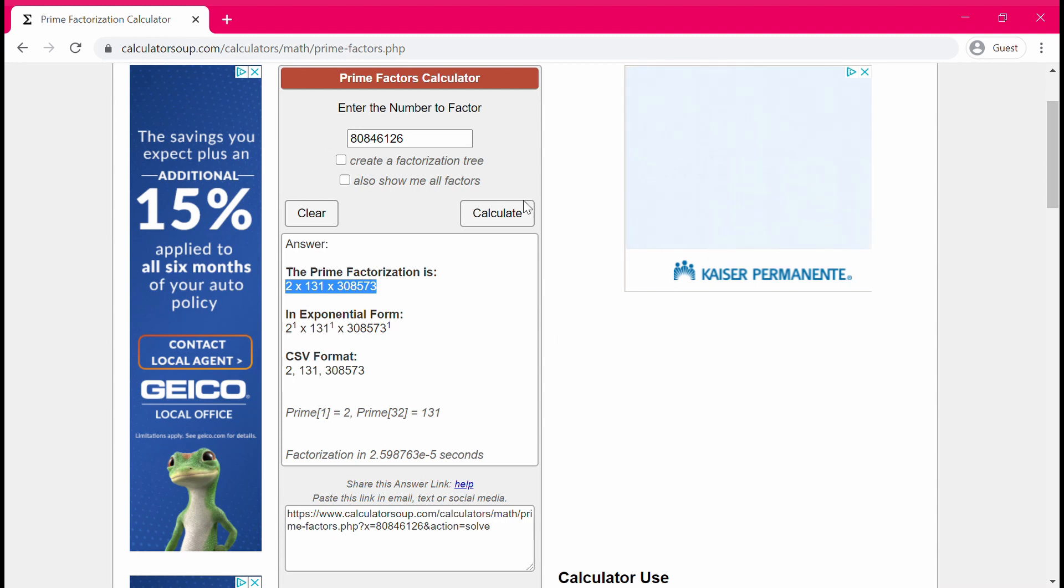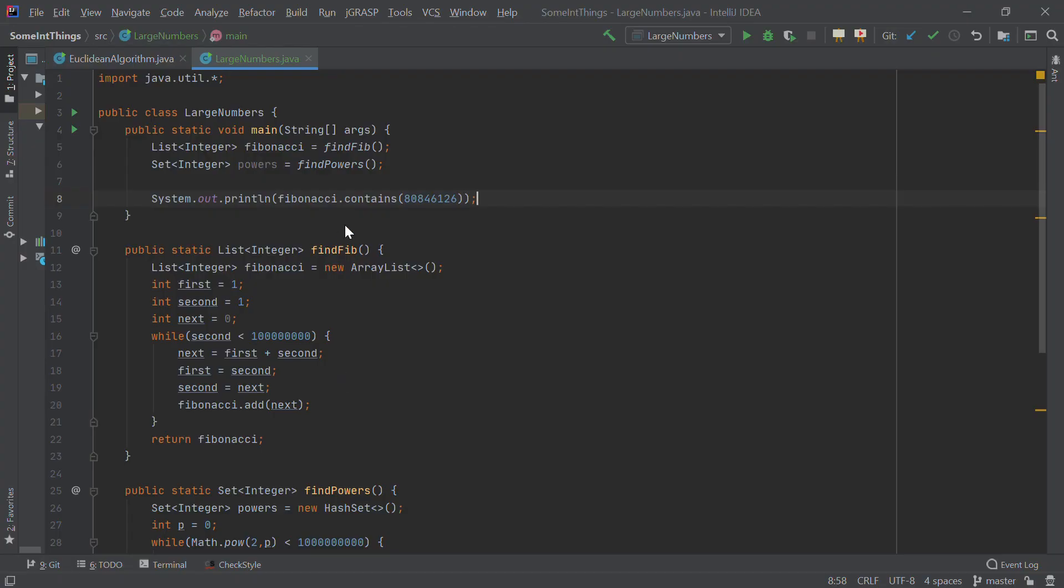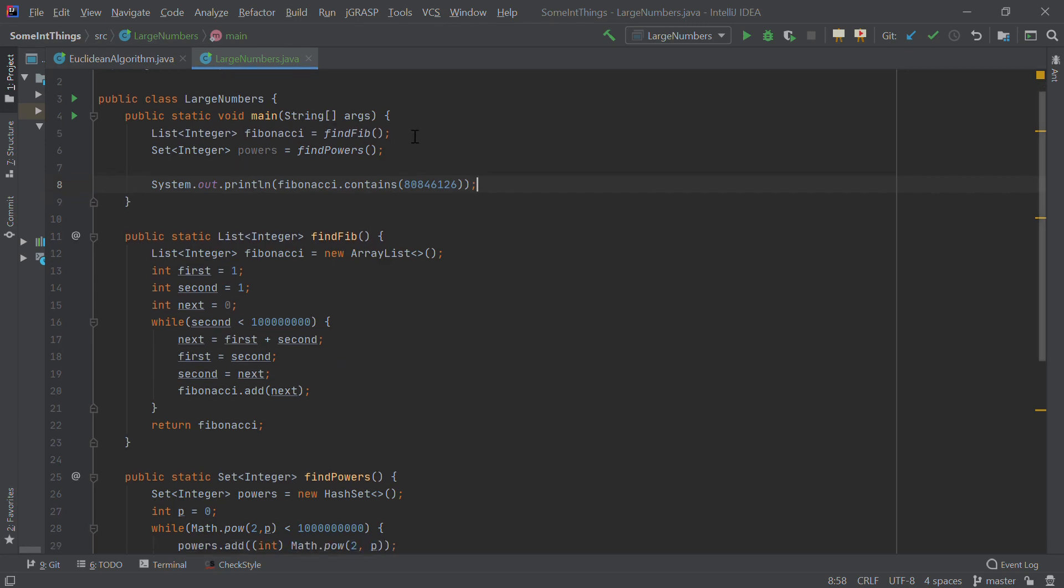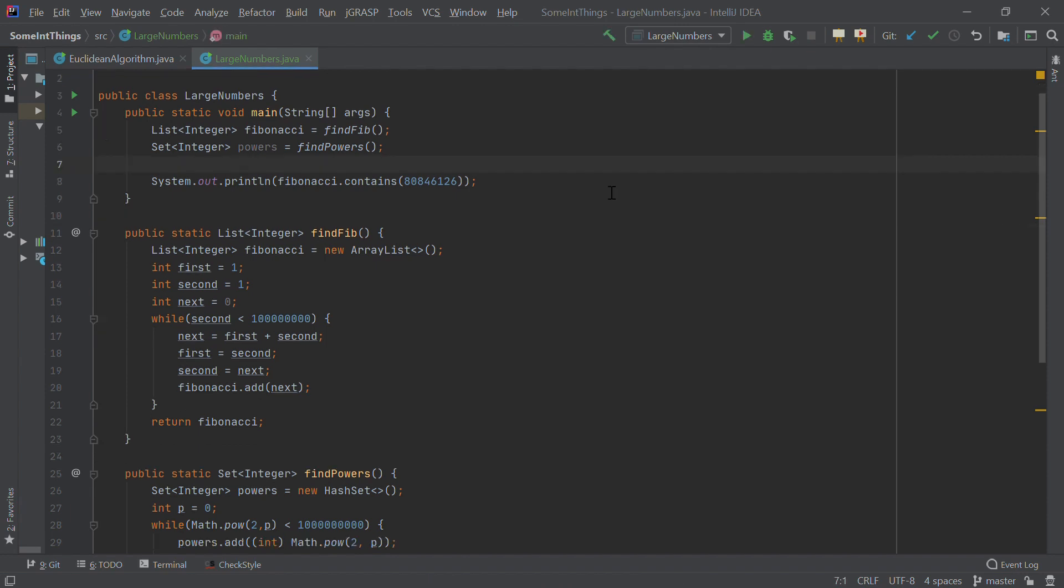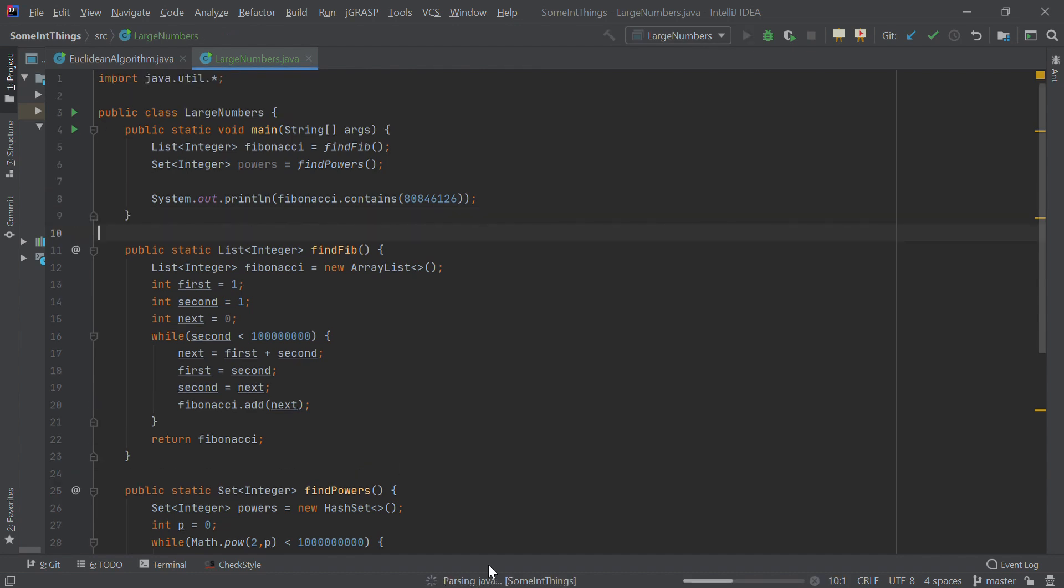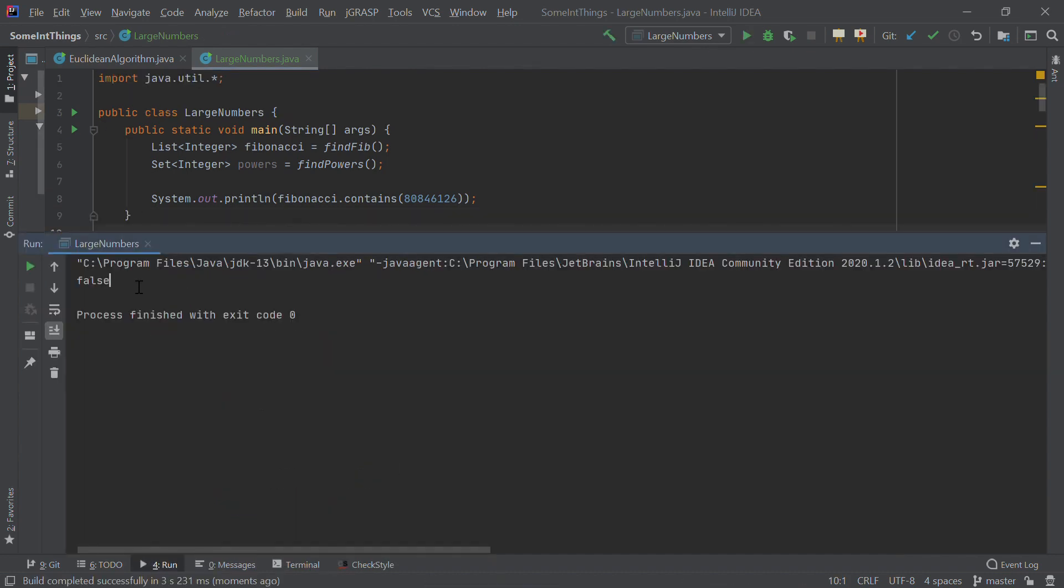Let's see if it's a Fibonacci number. I wrote this simple Java program to test various attributes of a number. It can make a set of Fibonacci numbers, a set of powers of two, and check if a number is prime. So we'll just ask if 80,846,126 is in the set of Fibonacci numbers. Okay, not a Fibonacci.